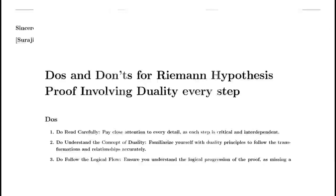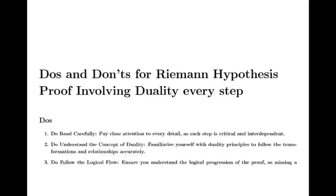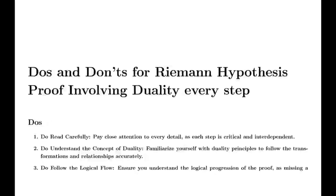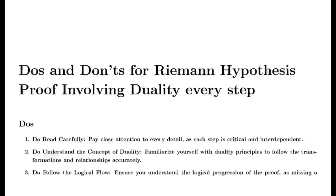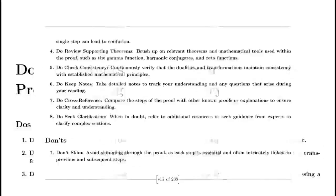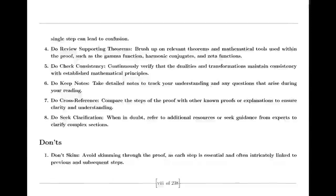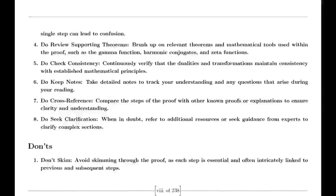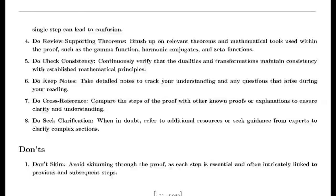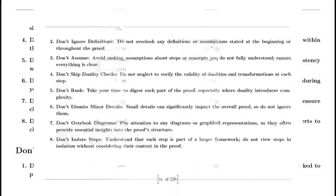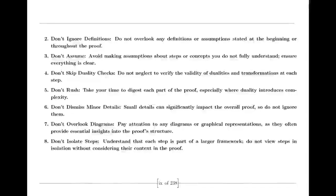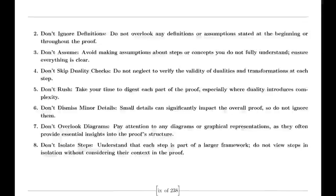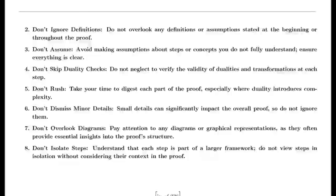Basel Problem Solution. Euler also tackled the Basel problem, concerned with finding the exact sum of the reciprocals of the squares of the integers. By examining the sine function and its product representation, Euler derived a formula showing that the sum of these reciprocals equals π²/6. This result was a significant achievement in mathematics, highlighting Euler's ability to uncover connections between different mathematical concepts.